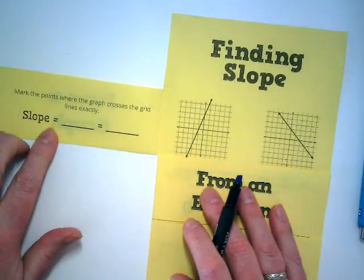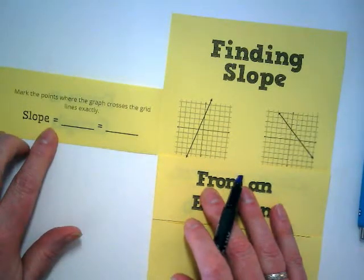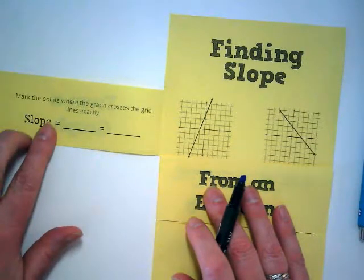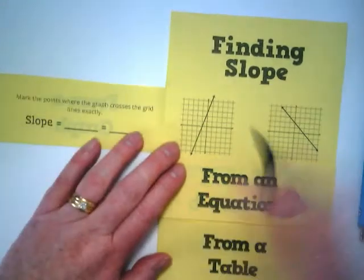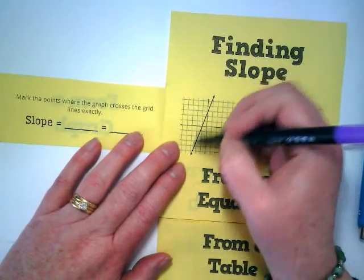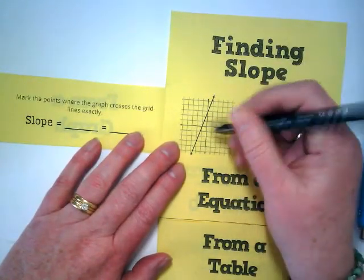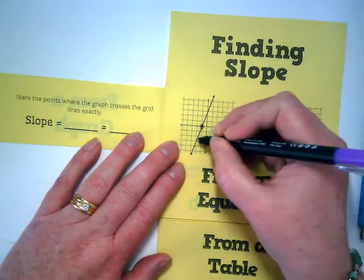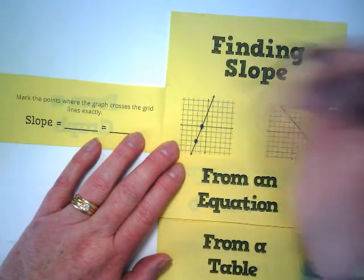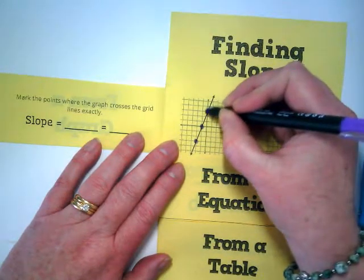Please look on the left side. The first step is to mark points where the graph crosses the grid line exactly. So let's look at this line here because this is the graph. I see one here. I see one here. I see one here. I see another one here.